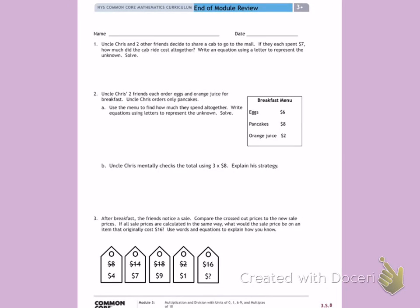This is Module 3, the end of Module Review, Side 1. Our objective this week, or for this unit, was I can multiply and divide in units of 0, 1, 6 through 9, and multiples of 10.